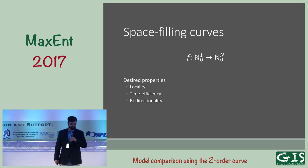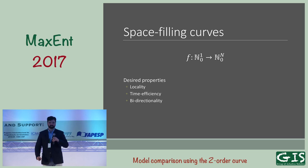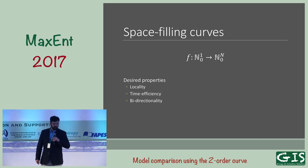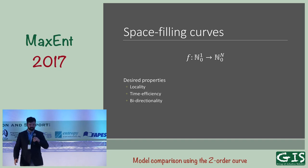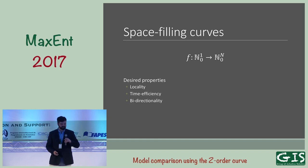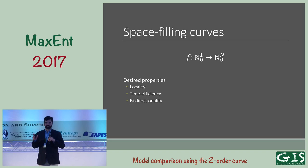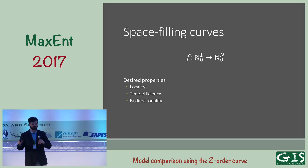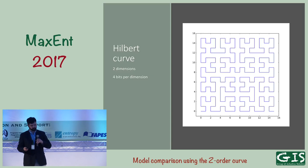A space filling curve, in the context we're looking at here, is a function that maps one-dimensional natural numbers to the N-dimensional set of natural numbers, and it needs to be bidirectional. Some other desired properties are that it needs to maintain locality — if two points on the curve are close, the corresponding points in space need to also be relatively close. The algorithms to do the transformations also need to be time efficient, and we need to go back and forth between the curve indices and the real parameter space.